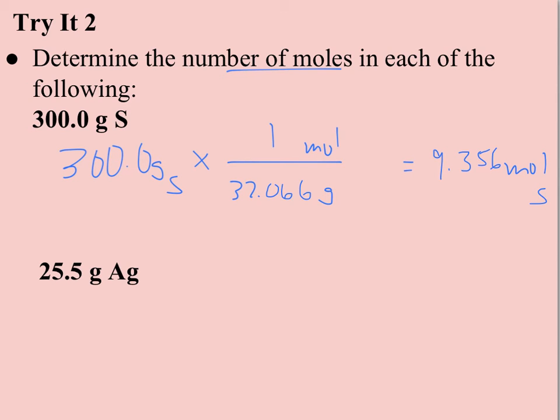25.5 grams of silver. Again, I want moles, I have grams, so I look up the molar mass of silver. Silver is a fairly heavy element, 107.87. So 25.5 isn't going to be much, a little less than a quarter mole. 0.236, hanging on to my 3 sig figs, moles of silver.